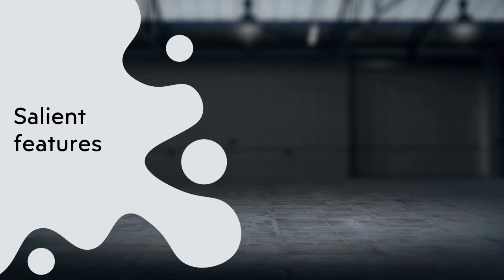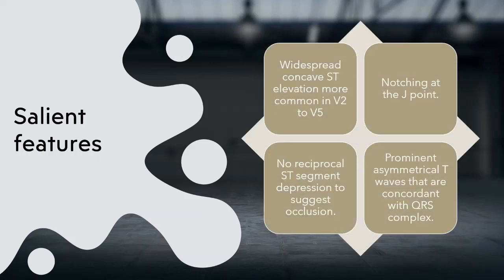Now what are the salient features? If we look at an ECG, there would be widespread concave ST elevations more common in the precordial leads like V2 to V5. You would see a notching at the J-point, there won't be any reciprocal ST segment depressions to suggest occlusions, and there would be prominent asymmetrical T waves that are concordant with the QRS complex. From that I mean that the T waves would be in the same direction as the major QRS complex.